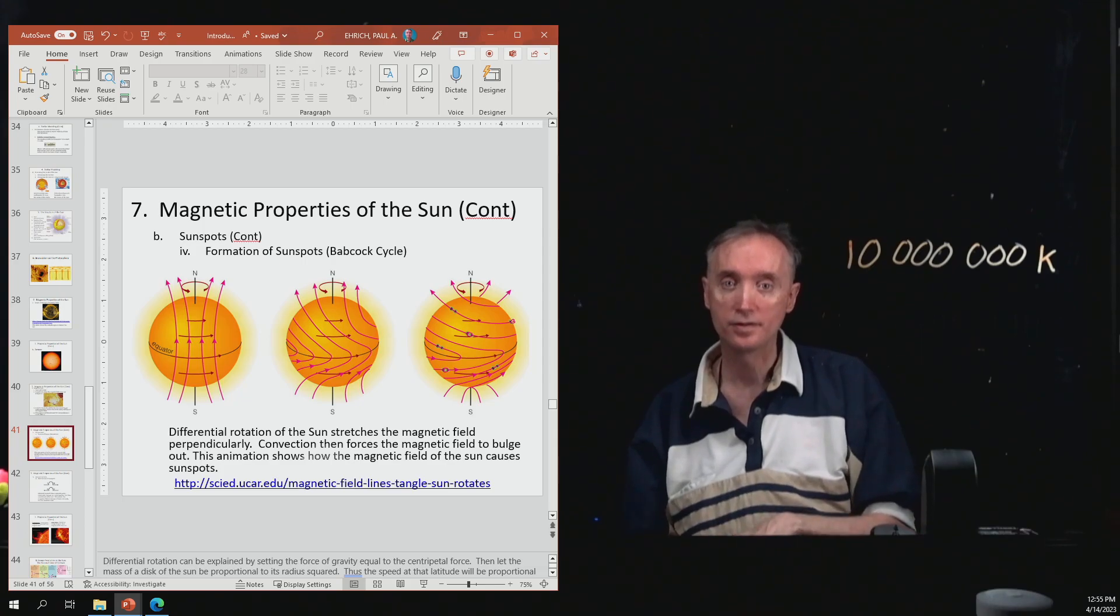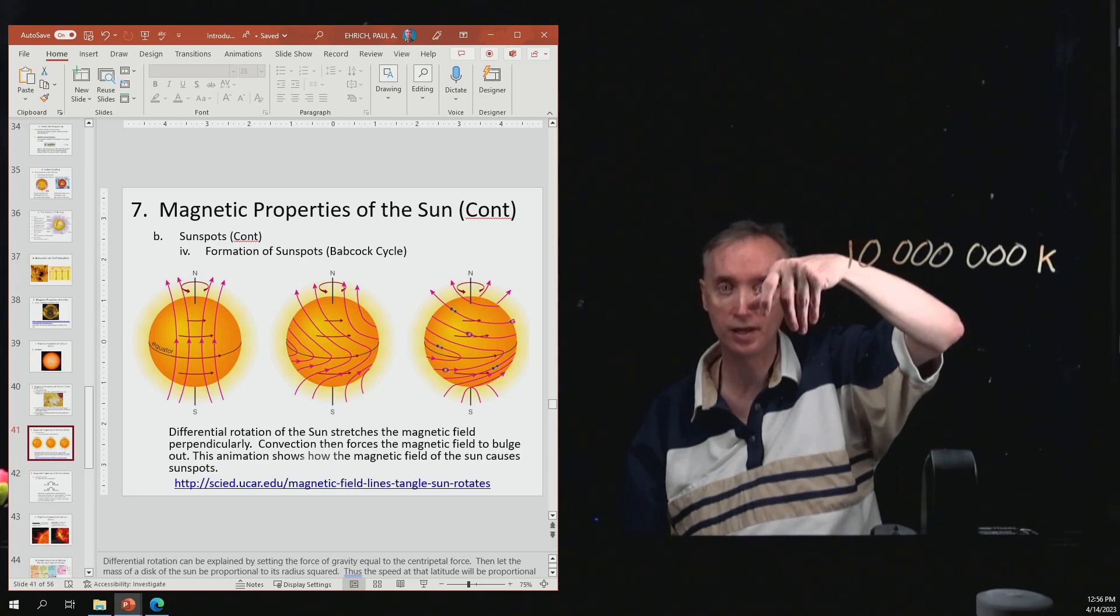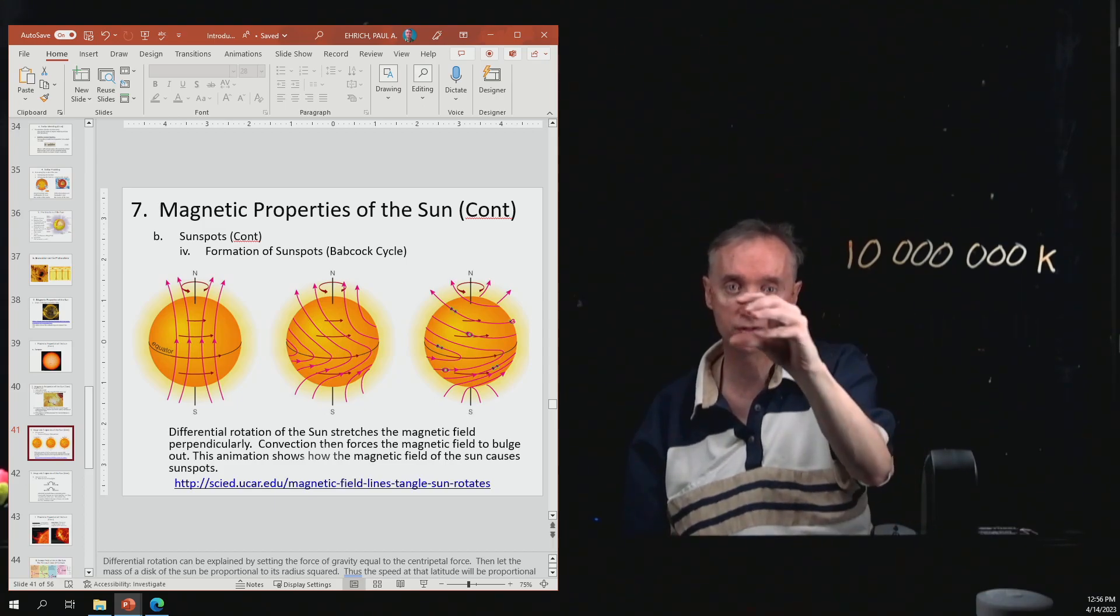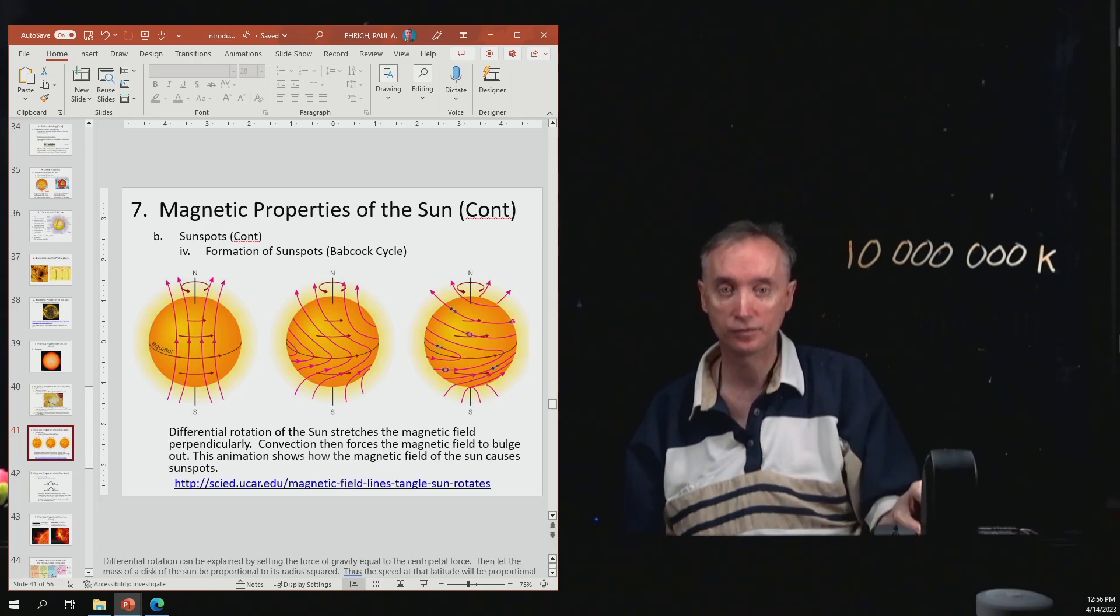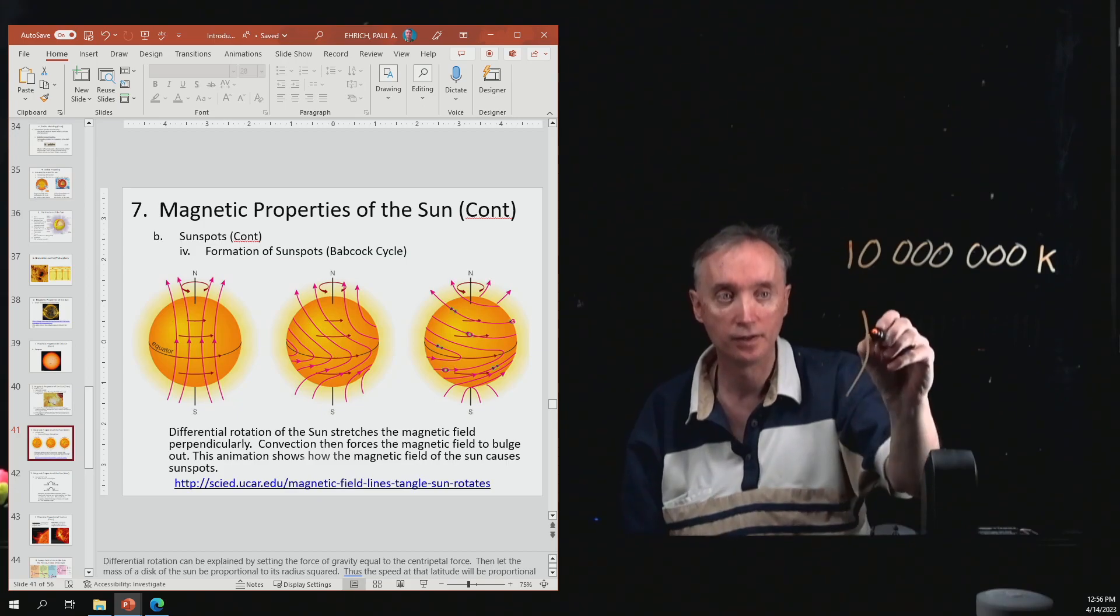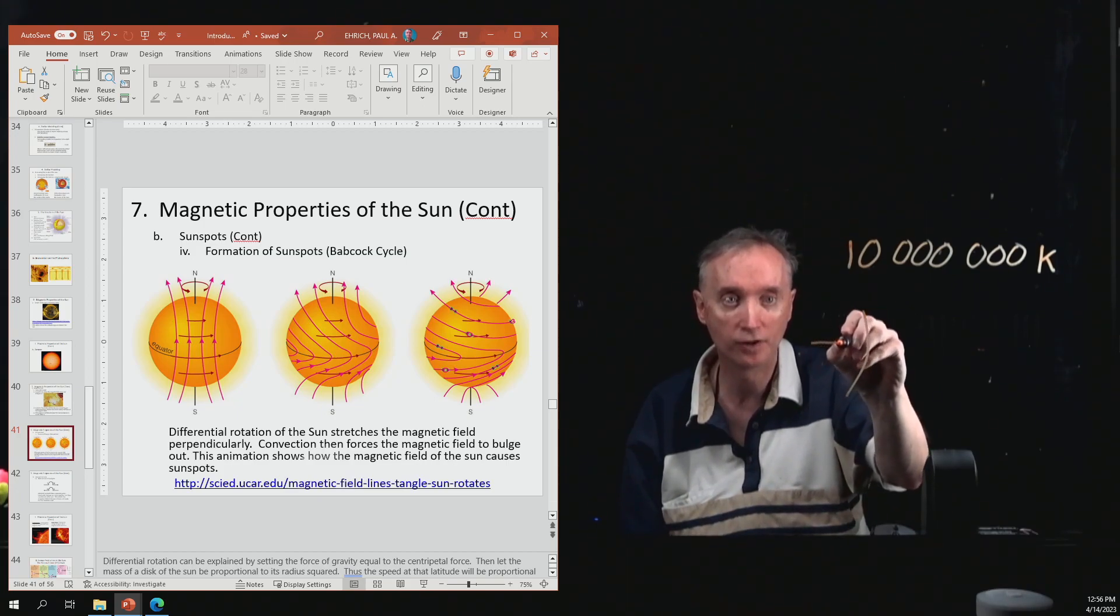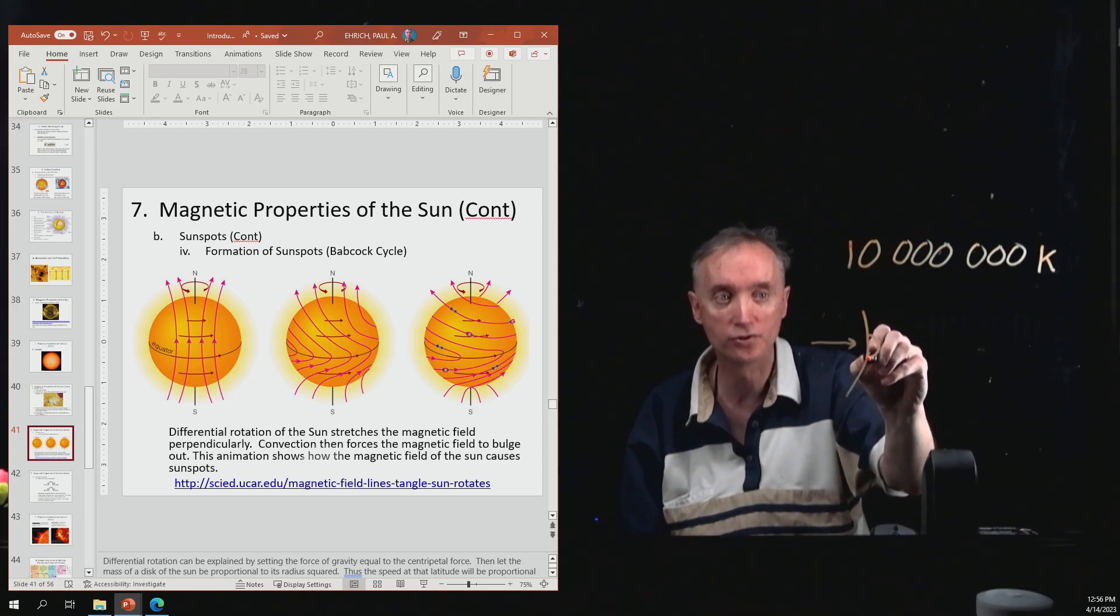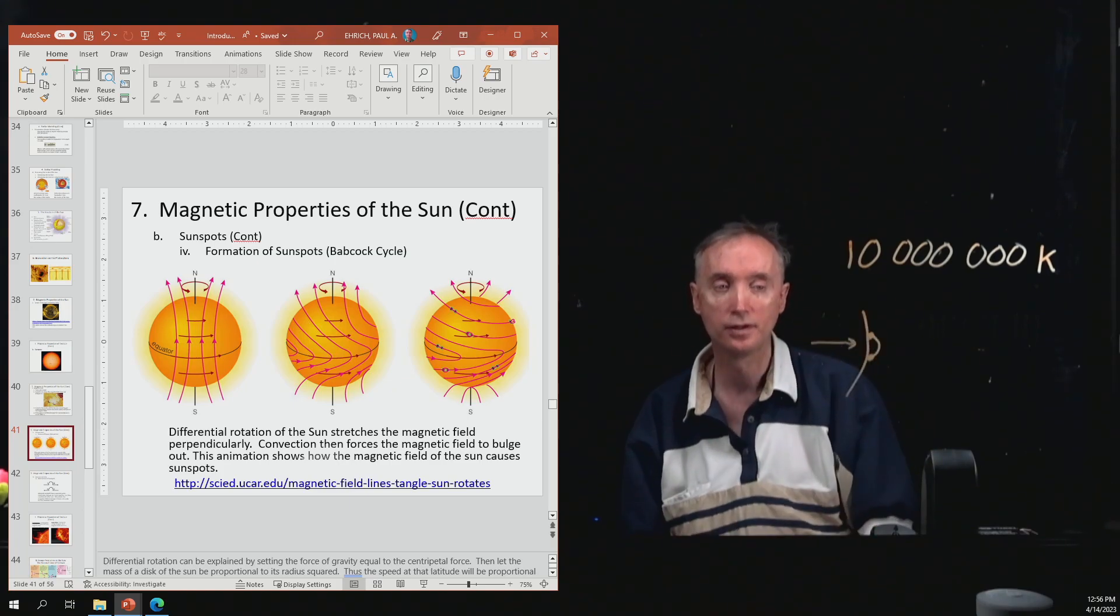Okay. Then, this is called the Babcock cycle and so you should understand that as the sun is rotating, it causes the magnetic field lines to wrap around the Sun and then the heat from the inside of the Sun will cause that magnetic field to bulge out so that if this is the, let's say that that's the surface of the Sun, then the heat which is coming from the inside and is trying to get out will cause that magnetic field to bulge like that and so this would be a sunspot and then this would be a sunspot.